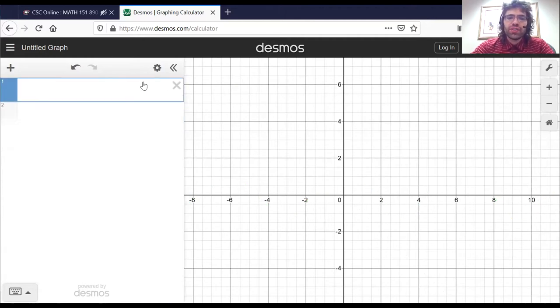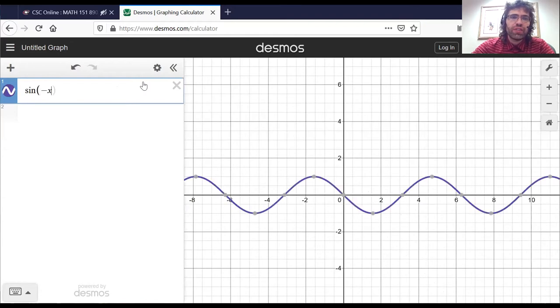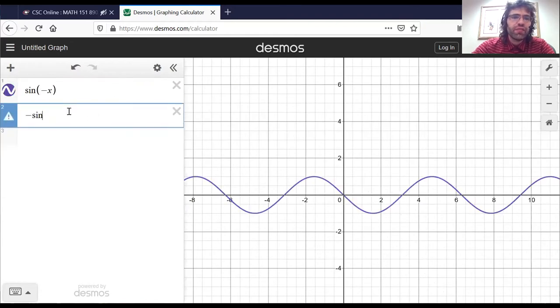And I've said that the sine of negative x is negative the sine of x. And that's true. We can see it. Here's the sine of negative x. Here's negative the sine of x. They're the same graph. And that's good.